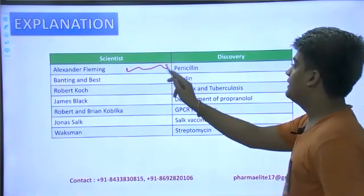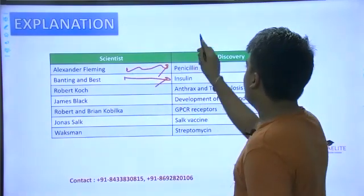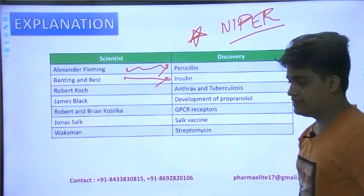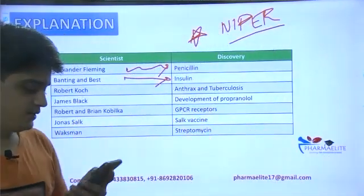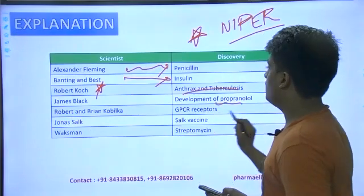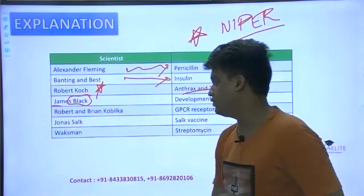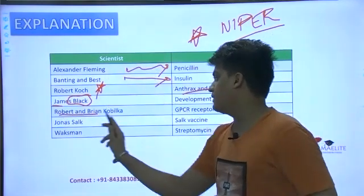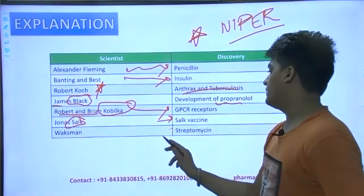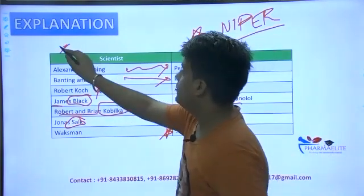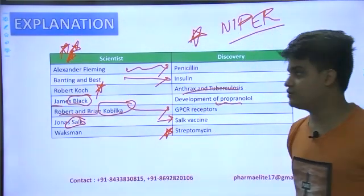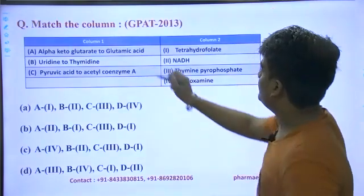Key drug discoveries: Alexander Fleming discovered penicillin; Banting and Best discovered insulin — very important for GPAT and NIPER. Robert Koch was involved in anthrax and tuberculosis. Development of propranolol was by James Black — be careful not to get confused with James Watt. John Salk was involved in the Salk vaccine and Waksman was associated with streptomycin. This whole table is very important — you can come back to this video and review it again.